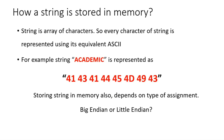Now let us see how a string is stored in memory. A string is nothing but multiple characters, so we represent every character of the string with its equivalent ASCII number. For example, for the string 'ACADEMIC' written in capital letters, the ASCII representation is an array of the ASCII of every character. I have written every ASCII in hexadecimal for easier binary conversion. ASCII of A is 41H, ASCII of C is 43H, ASCII of A is again 41H, and so on — this is how we represent a string using ASCII numbers.